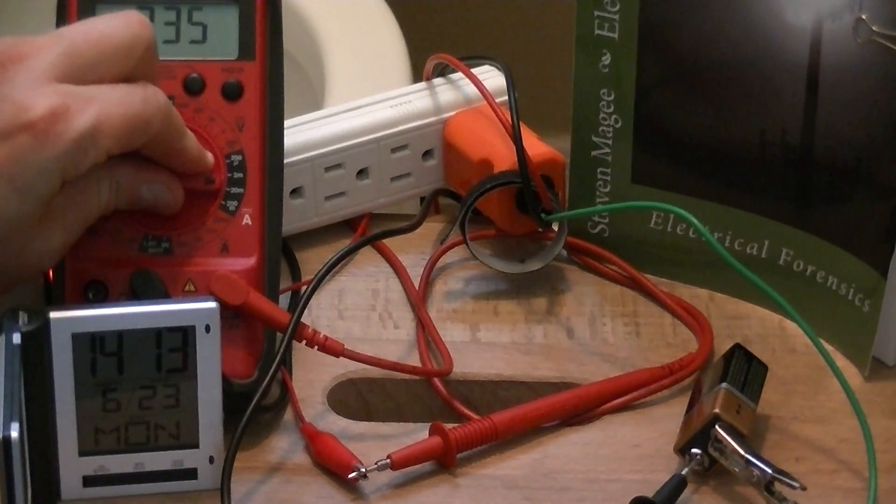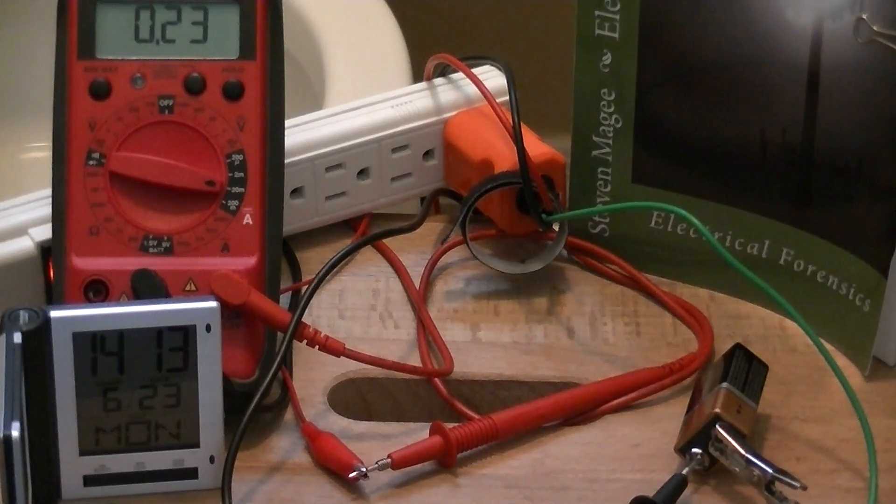We're actually getting 0.255 on the meter reading. Let's come back up a range. We're on 0.23. Let's put a little bit more brine down there. And let's see what current we get.